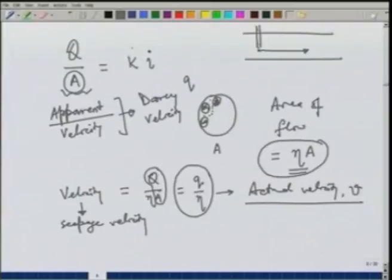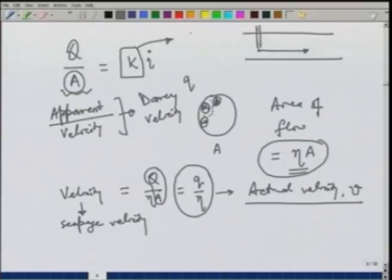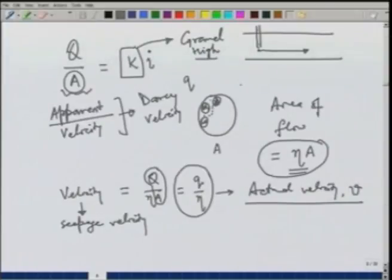The hydraulic conductivity is therefore a very important parameter and there are various ways of determining it for different soil formations. Typically gravel will have a very high conductivity, sand will have a little smaller, and clay will be very small. So in order to have a formation which yields enough water very fast, we should have a high porosity, high specific yield, and high hydraulic conductivity.